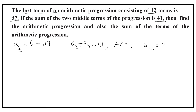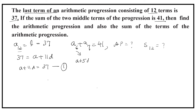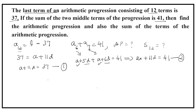To find the AP, we should know the first term and common difference. We can form equations here. A12 is given: 37 equals a plus 11d. This is the first equation. A6 is a plus 5d, and A7 is a plus 6d, and their sum equals 41. So 2a plus 11d equals 41. This is the second equation.